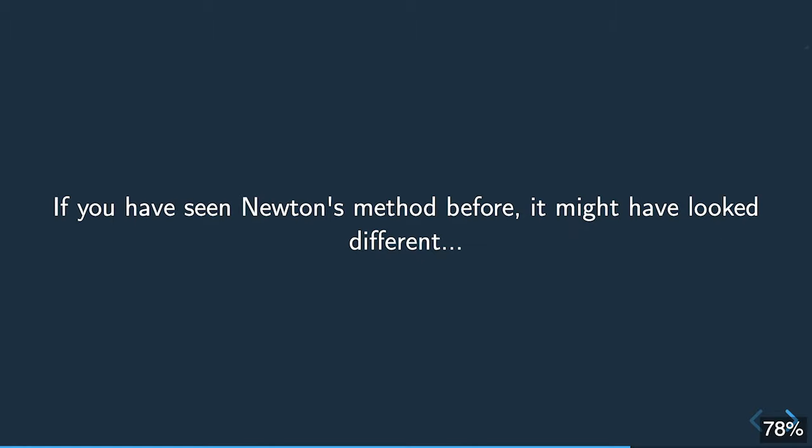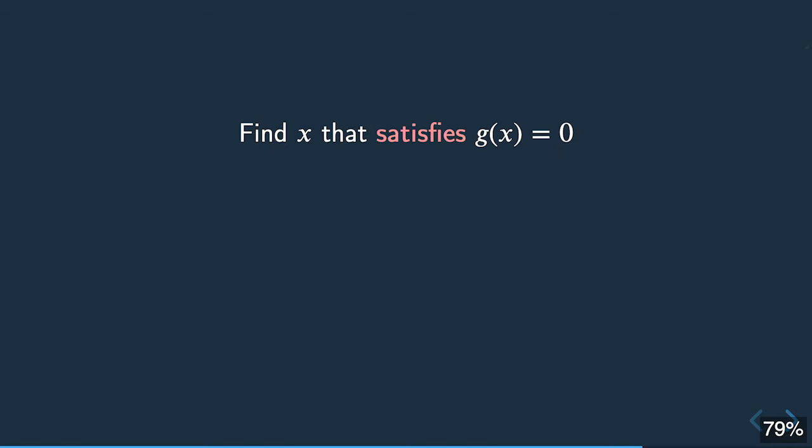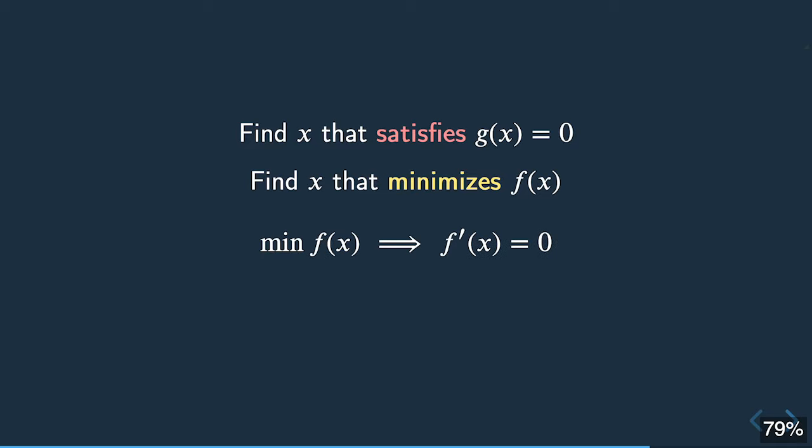If you have seen Newton's method before, it might have looked a little different. Usually when Newton's method is presented, it is about finding a solution to an equation g(x) = 0. What we have seen today is how to find an x that minimizes f(x). As it turns out, these two operations are related: when you minimize a function, you are looking for critical points where the derivative equals 0. So to solve g(x) = 0 you can look for a minimizer of the integral of g, which leads to the more familiar formula.